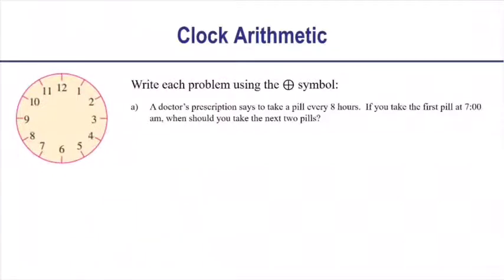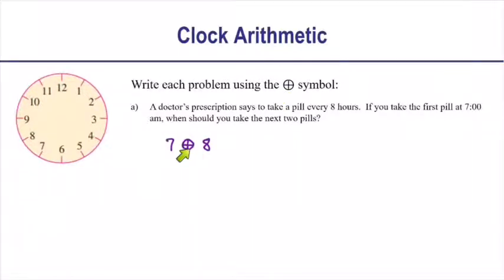We're going to write each problem using our new circle-plus symbol and then solve. First, a doctor's prescription says to take a pill every 8 hours. If you take the first pill at 7 a.m., what time should you take the next two pills? To write this with our circle-plus symbol: 7 circle-plus 8. Normally 7 plus 8 is 15, but on the clock, once we get past 12 we start back around the circle again.